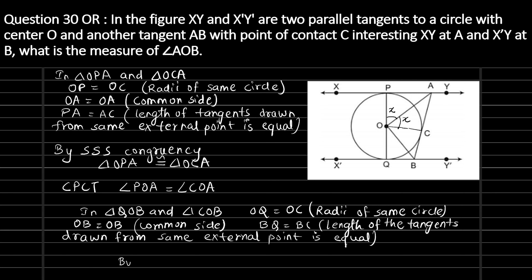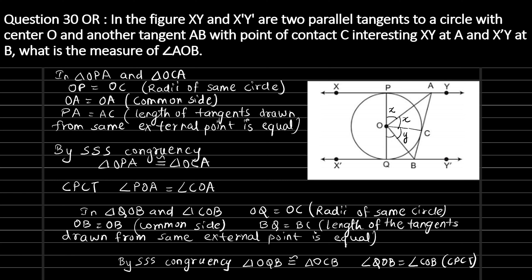So here also, by Side-Side-Side congruency, triangle OQB is congruent to triangle OCB. We can also imply by CPCT that angle QOB is equal to angle COB. Let's say angle COB is y and angle QOB is y — they are both equal.